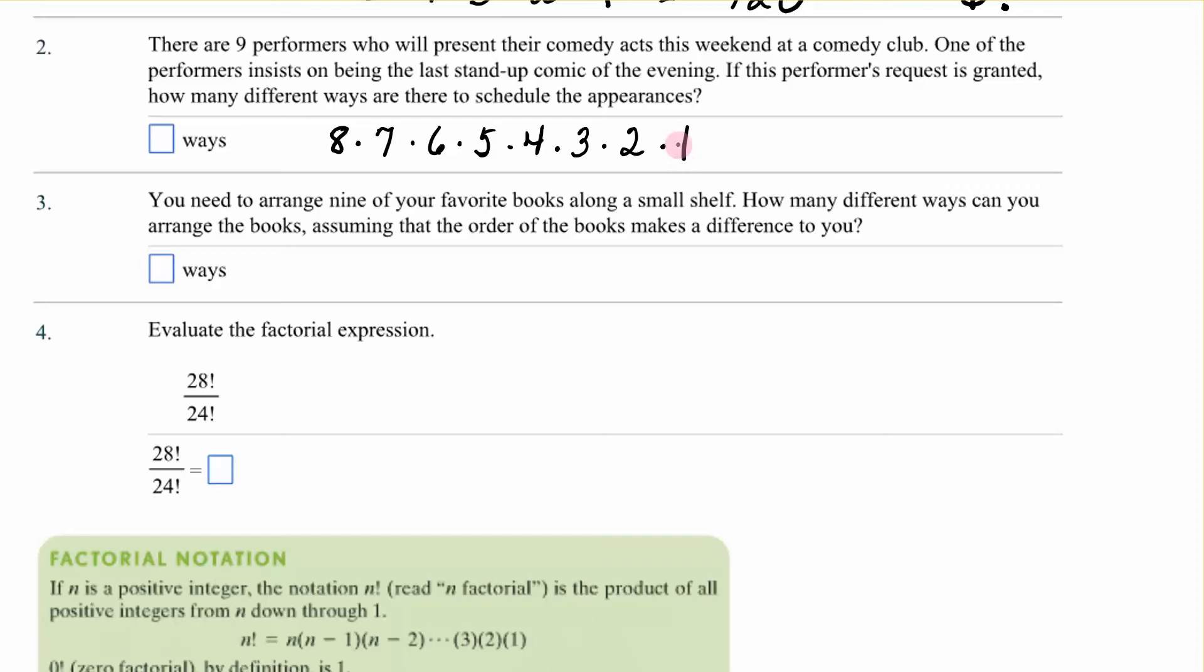By taking one of the people out and saying, okay, you are automatically going to be last, then there were only eight to start with. So multiply that and it is 40,320.